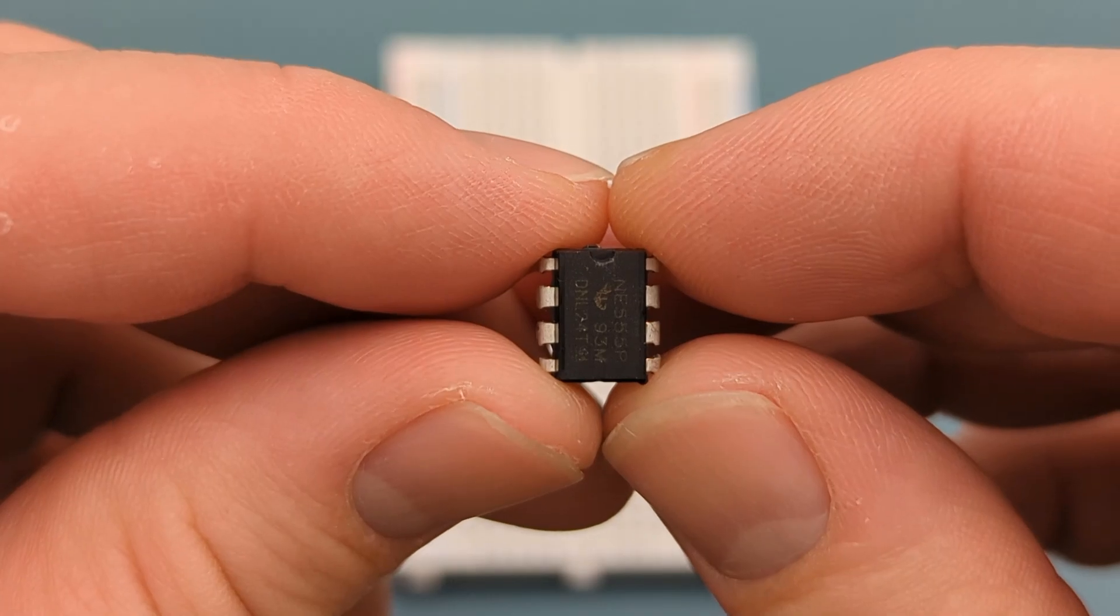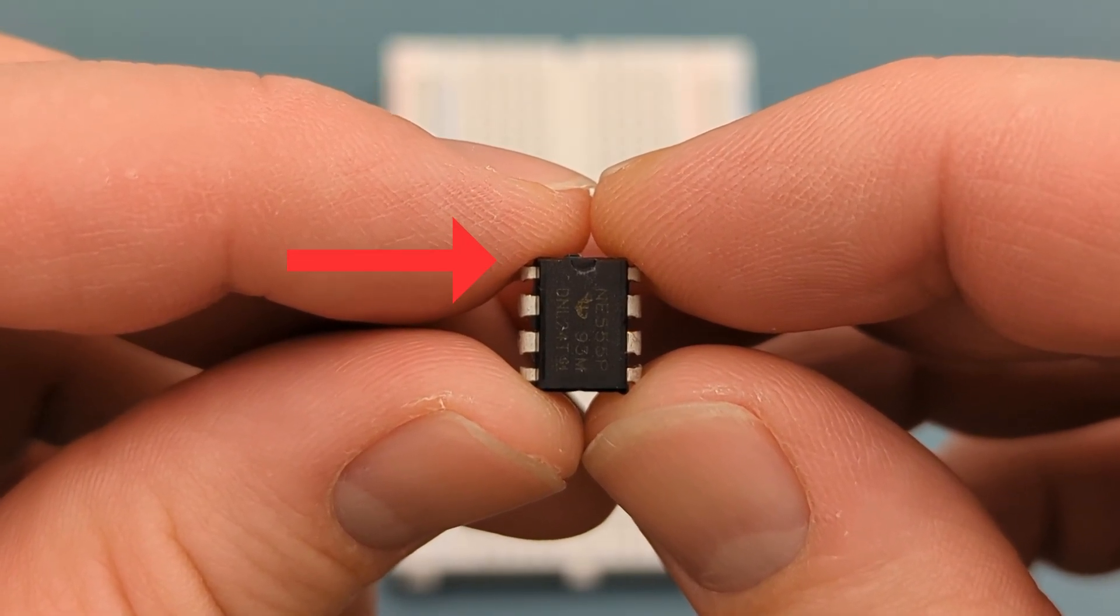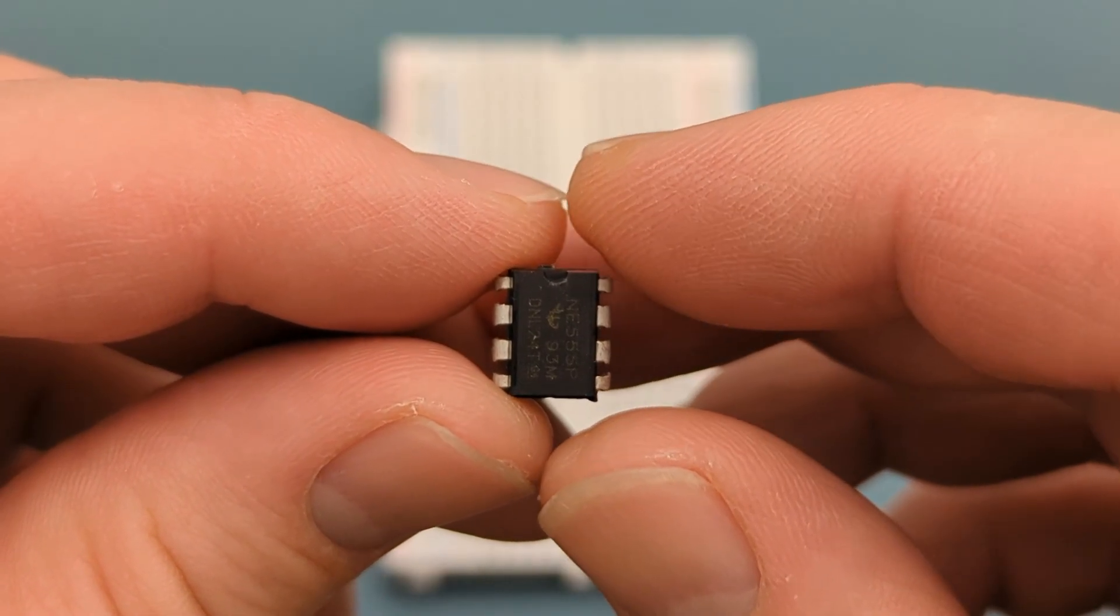Let's set up the circuit step-by-step. Begin by positioning the 555 timer IC on the breadboard. The pins are numbered counterclockwise, starting from the top left corner. Insert the 555 timer in the middle of the breadboard.